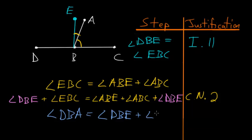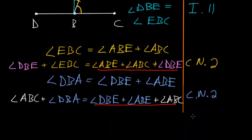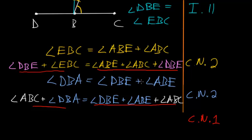Again we're going to use Common Notion 2 to add angle ABC to each side. Now that we've added angle ABC to each side, we can notice that the right-hand side of this equation is the same as the right-hand side of the previous equation — both contain DBE, ABE, and ABC. So we can use Common Notion 1, which says that if two things are equal to the same thing then they're equal to each other.